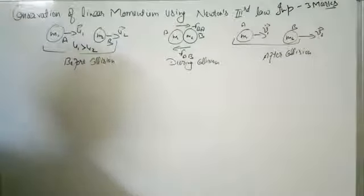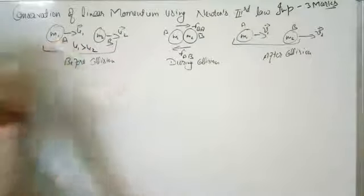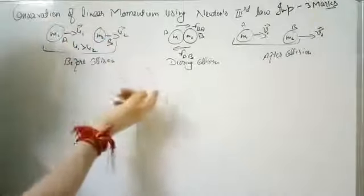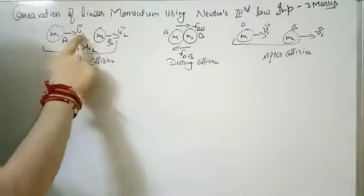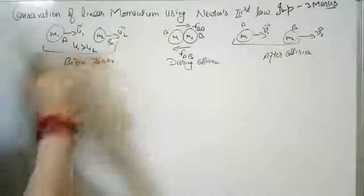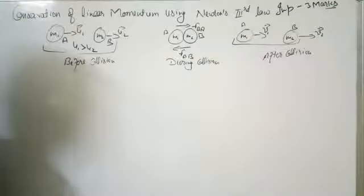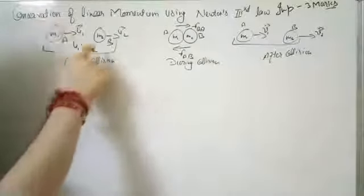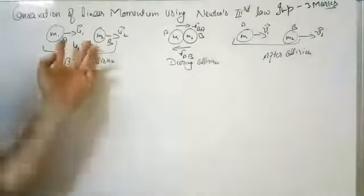In the diagram, I have considered two bodies: body A and body B. Both are moving with different velocities. Body A has initial velocity U1, and body B has initial velocity U2, where U1 is greater than U2.